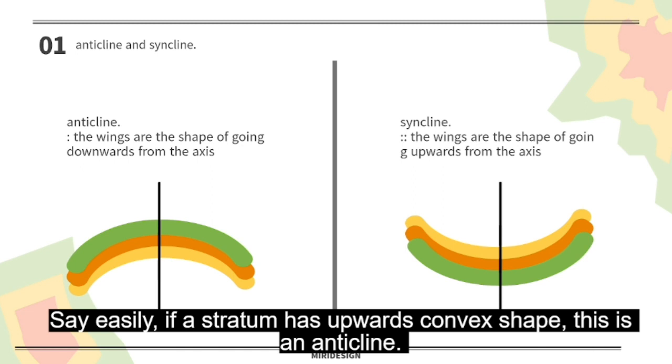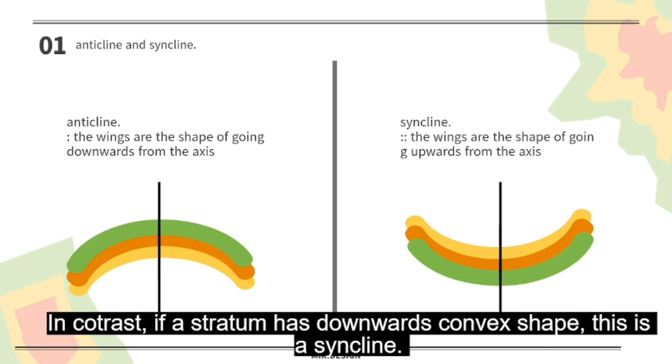Say easily, if a stratum has upwards convex shape, this is an anticline. In contrast, if a stratum has downwards convex shape, this is a syncline.